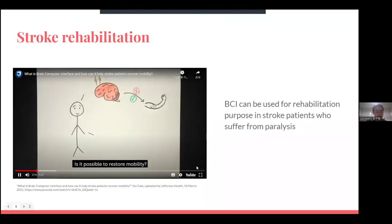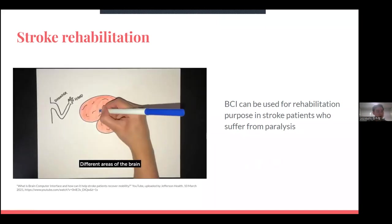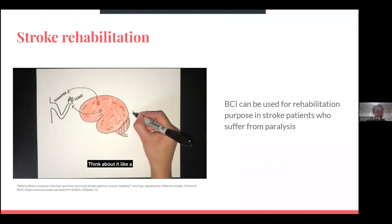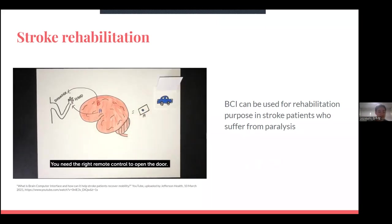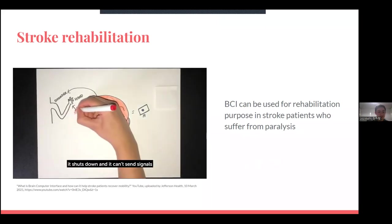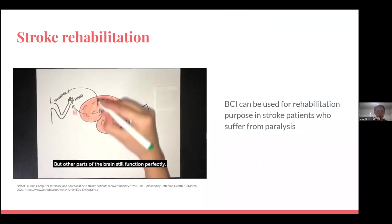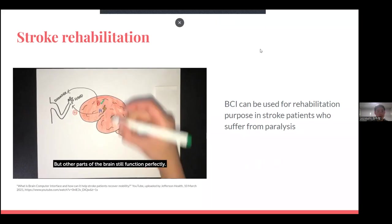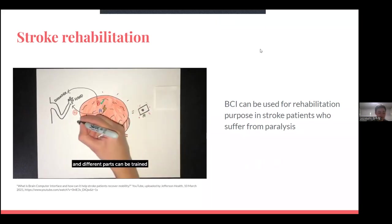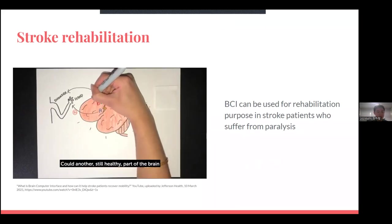Different areas of the brain control movement of different parts of the body. Think about it like a remote control to a garage door. When part of the brain is damaged by a stroke, it shuts down and can't send signals, like a broken remote control. But other parts of the brain still function perfectly.